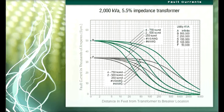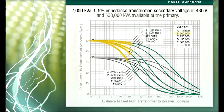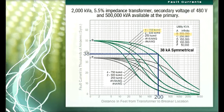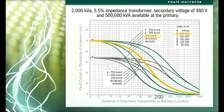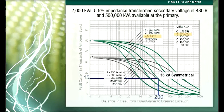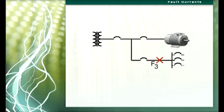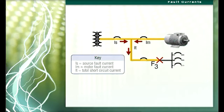Given a 2000 KVA, 5.5% impedance transformer, secondary voltage of 480 volts, and 500,000 KVA available at the primary of the transformer, fault current at 200 circuit feet for four 750 kcmil per phase conductors is approximately 38 kA symmetrical. If the conductors are one 250 kcmil per phase, the fault current at 200 circuit feet is approximately 15 kA. Total short circuit current at a fault is the sum of that available from the source and the current contributed by the load. The load contribution comes from running motors, as the motors become generators.